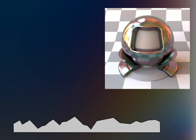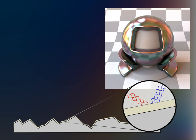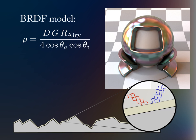We model iridescent materials by adding a thin-film layer on top of the microscopic structure. Its thickness is on the order of visible wavelength, which requires working with wave optics. The resulting thin-film iridescence is modeled with a new reflectance term R, computed using Airy summation, which accounts for wave interference.